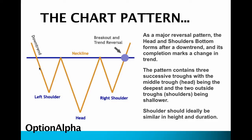After the downtrend, it'll form the left shoulder, but you won't note it at the time. It'll come back up, touch and retrace the neckline, then come back down a second time and form the head. At this point, you can see that the market has moved lower than the previous left shoulder, so all indications are that this is still a downward trending stock — that it's going to continue along that downtrend, making those lower lows and lower highs.